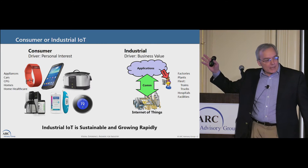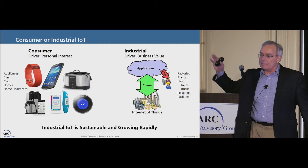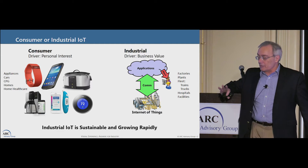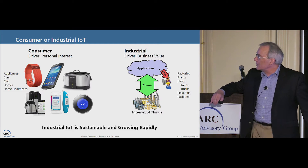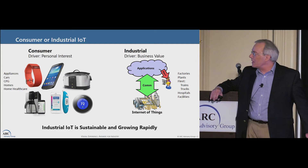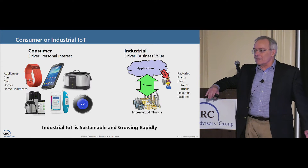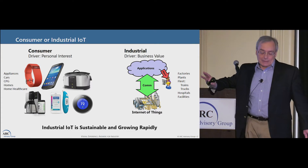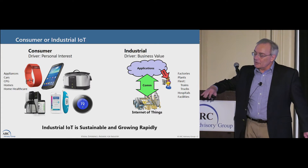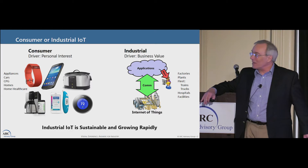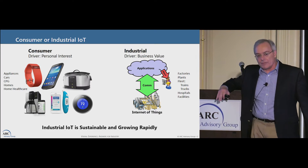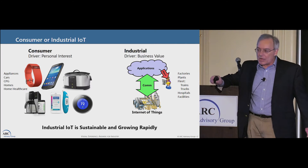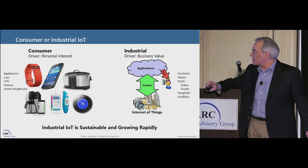I think the consumer IoT is starting to exhibit some fad-like behavior. For example, the Fitbit folks were doing really great a couple of years ago, but now they're starting to have a little bit of trouble. Cell phones will exist for a good long time, but some of these areas are actually silly — like the IoT fork and IoT coffee cup. Those things didn't last too long. But on the right, the industrial stuff is driven by clear business value, which I will get to in the course of these slides.